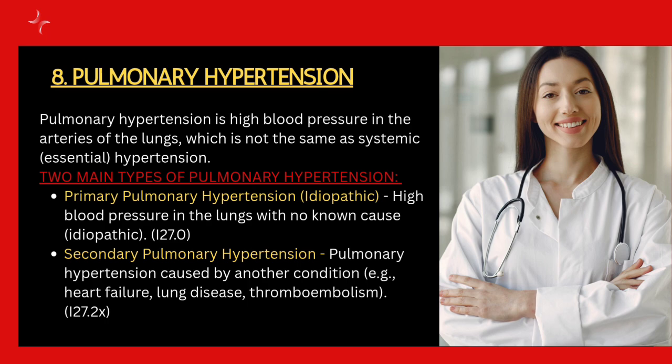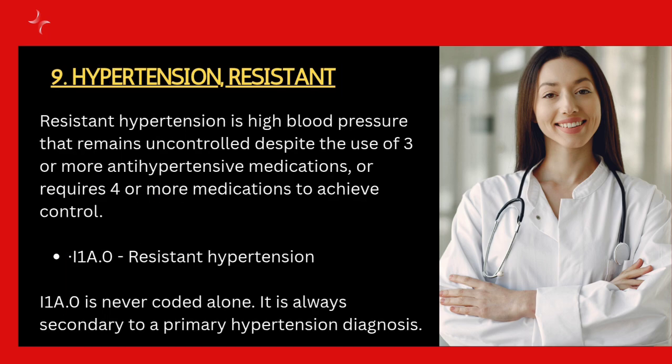Next comes pulmonary hypertension — high blood pressure inside the arteries of the lungs, which is not the same as normal hypertension. There are two types: primary pulmonary hypertension with no known cause, coded as I27.0, and secondary pulmonary hypertension caused by another disease condition, coded as I27.2.